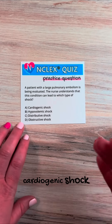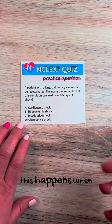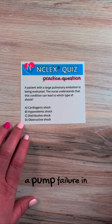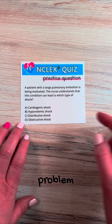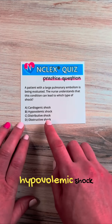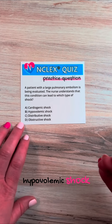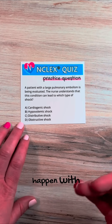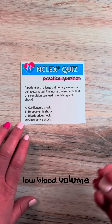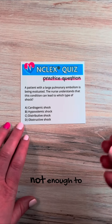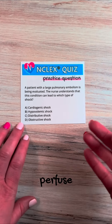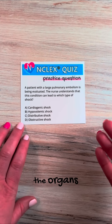Cardiogenic shock happens when there's a pump failure in the heart — so it's a heart problem. Hypovolemic shock happens with low blood volume, when there's low fluid volume in the body — not enough to perfuse the organs.